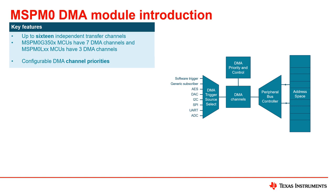CPU is not required when data is moved into or out of a peripheral, allowing the CPU to remain in low power modes, thus reducing power consumption across the MCU system. Our DMA module includes an arbiter to handle the priority between DMA requests.